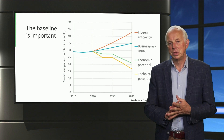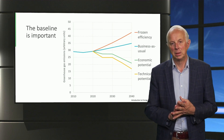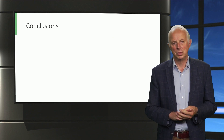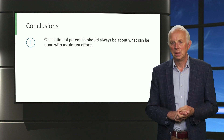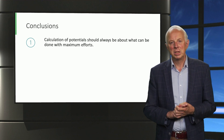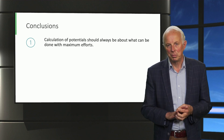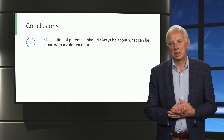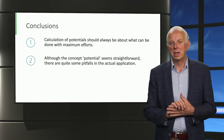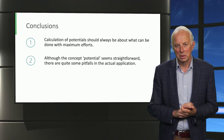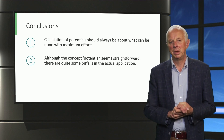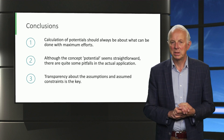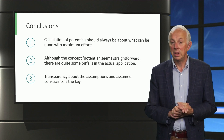Having discussed today's topics, we come to several conclusions. Firstly, calculation of mitigation potential should always be about what can be done with maximum efforts, but sometimes other constraints are taken into account. That is why the concept of potential seems straightforward, but there are some pitfalls in the actual application. Last but not least, transparency about assumptions and assumed constraints is key.